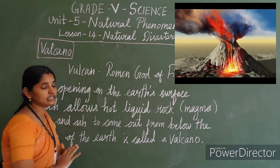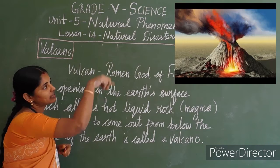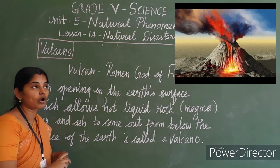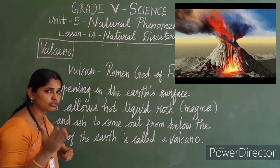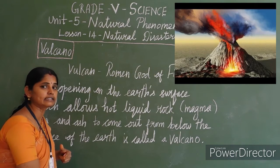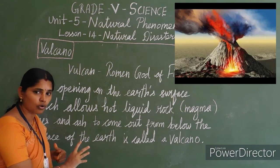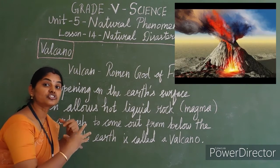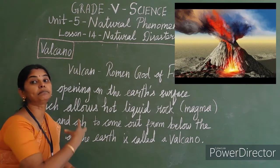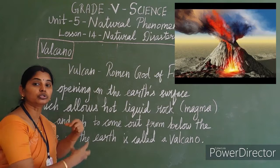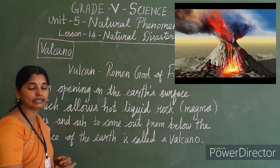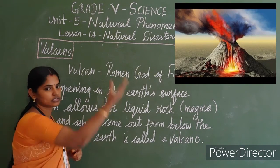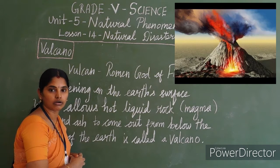See that picture. See, in volcanoes, because of pressure — why it comes out? Because of the change in pressure. Due to that pressure condition only, it comes out. It oozes out — the volcano.